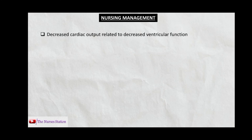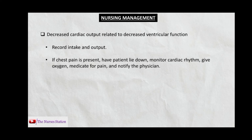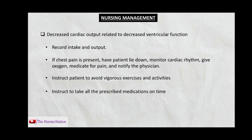Nursing management: the first nursing diagnosis is decreased cardiac output related to decreased ventricular function. Interventions include recording intake and output, which is directly related to blood volume and cardiac output. If the patient has chest pain, have them lie down, monitor cardiac rhythm, give supplemental oxygen, administer pain medication, and notify the physician immediately. Instruct the patient to avoid vigorous exercise to decrease cardiac workload, and to take all prescribed medications on time.